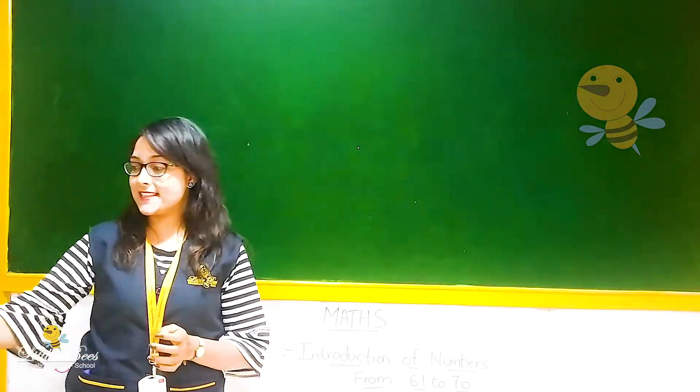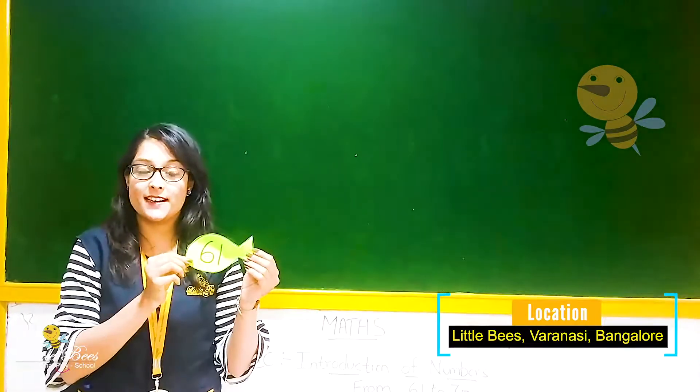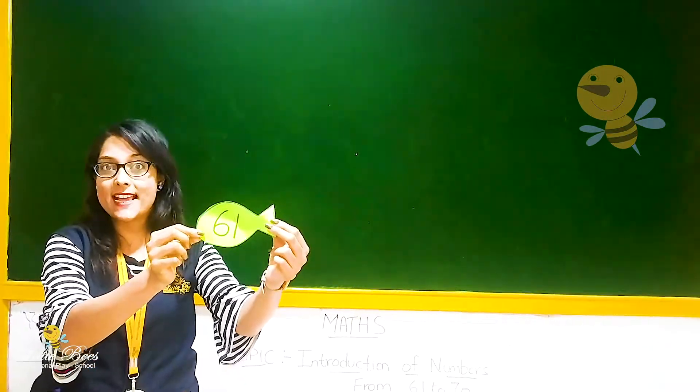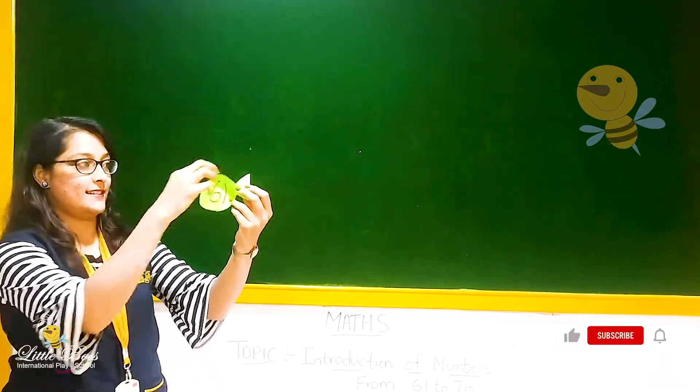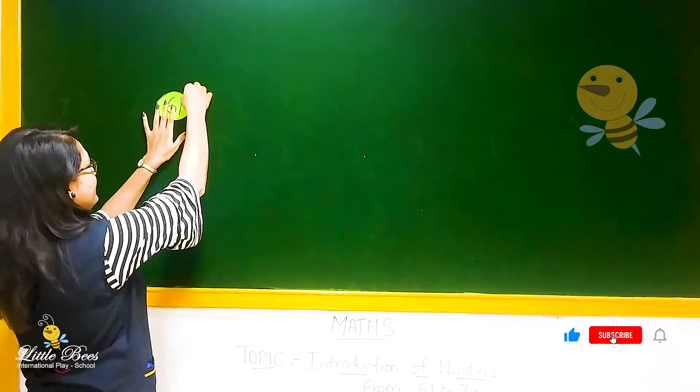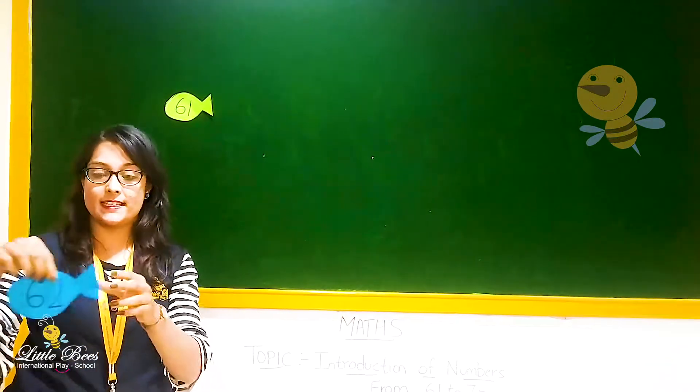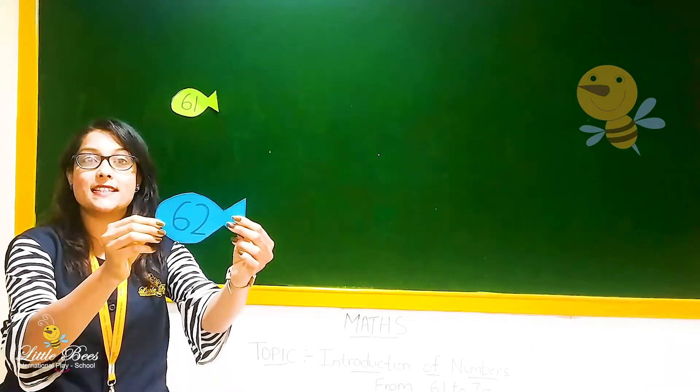So the first number is, can you see here, 61, 61, 61. Next number is 62, 62.